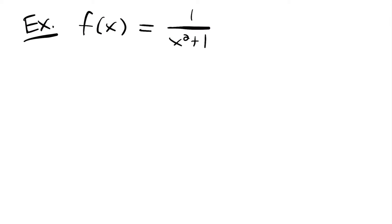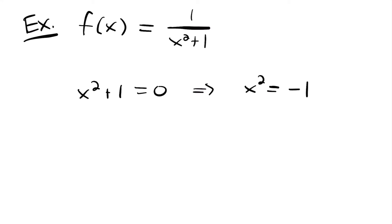How about the function 1 / (x² + 1)? What would make this function discontinuous? Any time the denominator is 0, we have an undefined value and thus a discontinuity. So we'll set the denominator equal to 0: x² + 1 = 0, which gives x² = −1. But there's no real number we can square to get negative 1. So there's no value of x that would make this function undefined, meaning this function is continuous everywhere — continuous on negative infinity to infinity.